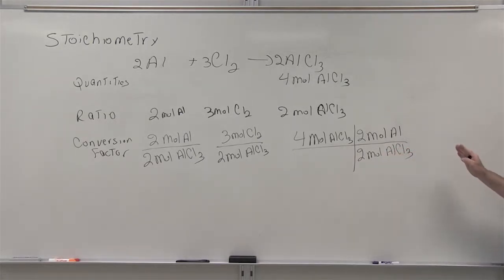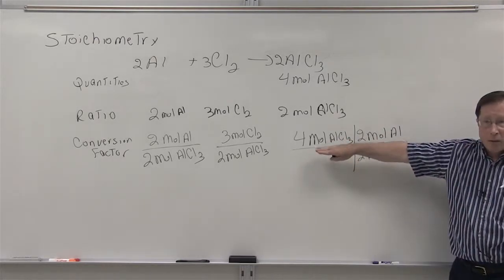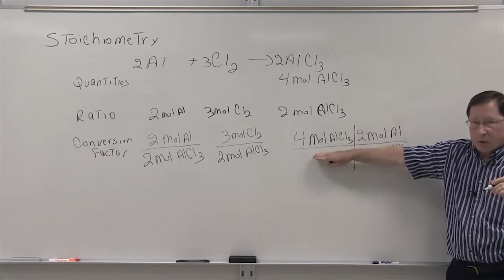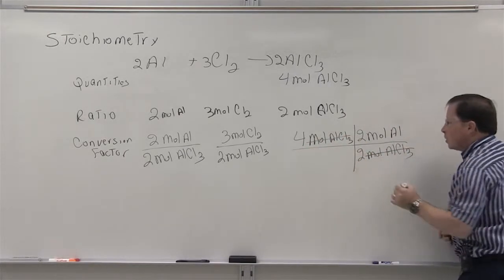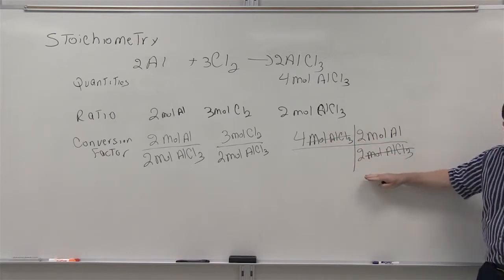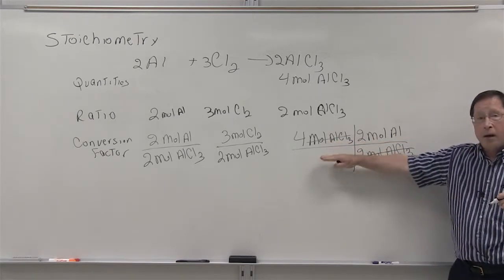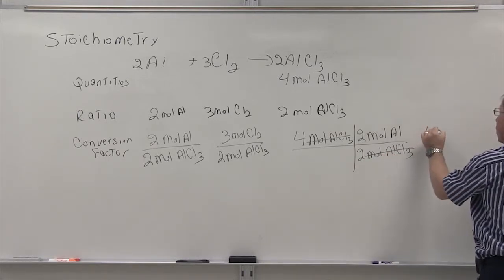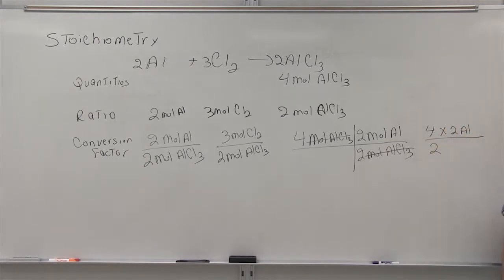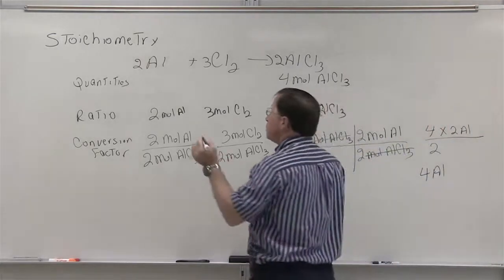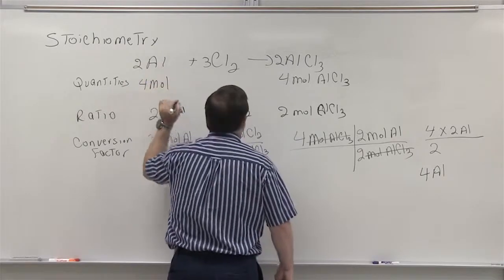Now, I want you to notice that you have a fraction being multiplied by this value. We can essentially cancel our units in the fractions because this would be in the top part of the fraction. This is in the lower part. The moles of aluminum chloride cancel out. And that leaves us with four times two aluminum over two, and that's going to simplify to four aluminum. So what we need for aluminum is four moles of aluminum.